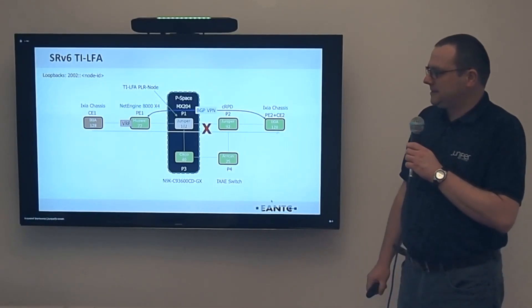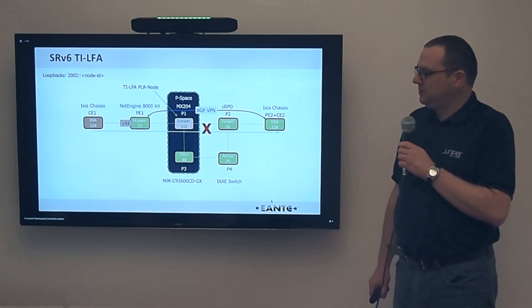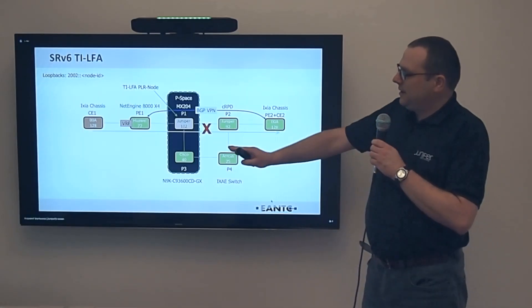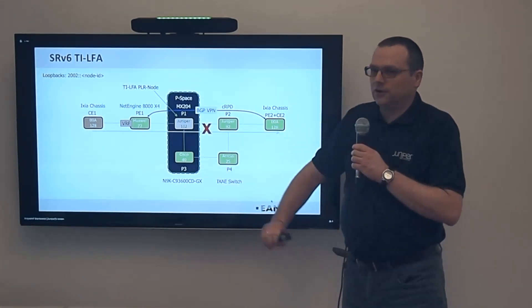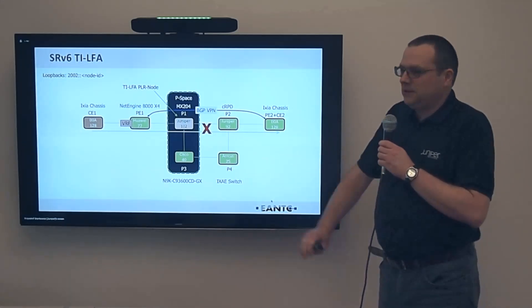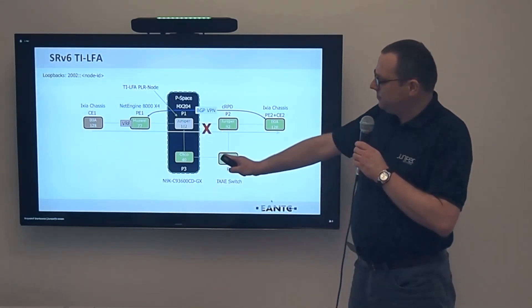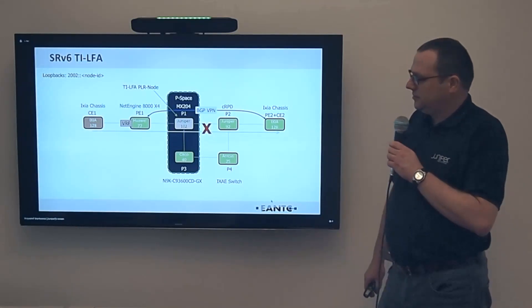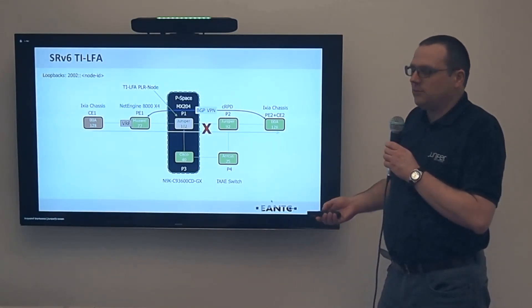Our first step to find the backup path is to calculate so-called P-SPACE and Q-SPACE. What is the P-SPACE? P-SPACE is the set of routers that the PLR, which is the point of local repair, can reach without crossing the failed links or the links that you'd like to protect. As you see here, PLR is Juniper 102 because this is the directly connected router to the failure domain. In this example from Juniper 102, only Cisco 40 can be reached without crossing this failed link. Arcus 25 cannot be reached because to reach Arcus 25, there is ECMP. One leg of ECMP is going over Juniper 92, another leg is going over Juniper 40. So this is our P-SPACE.